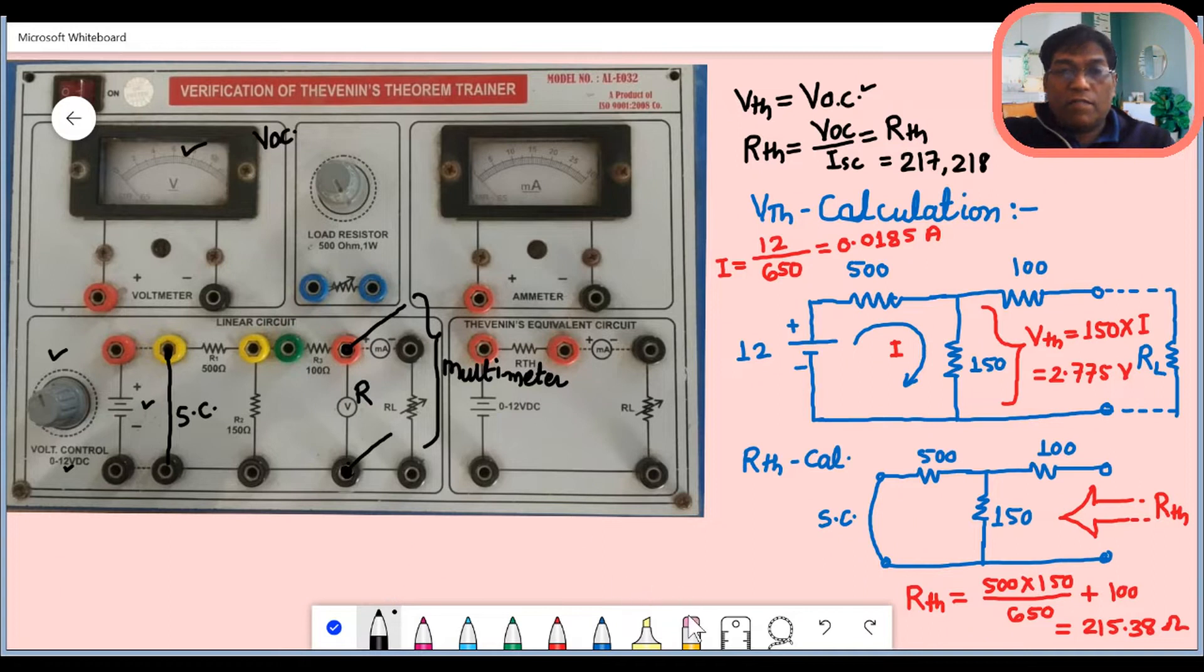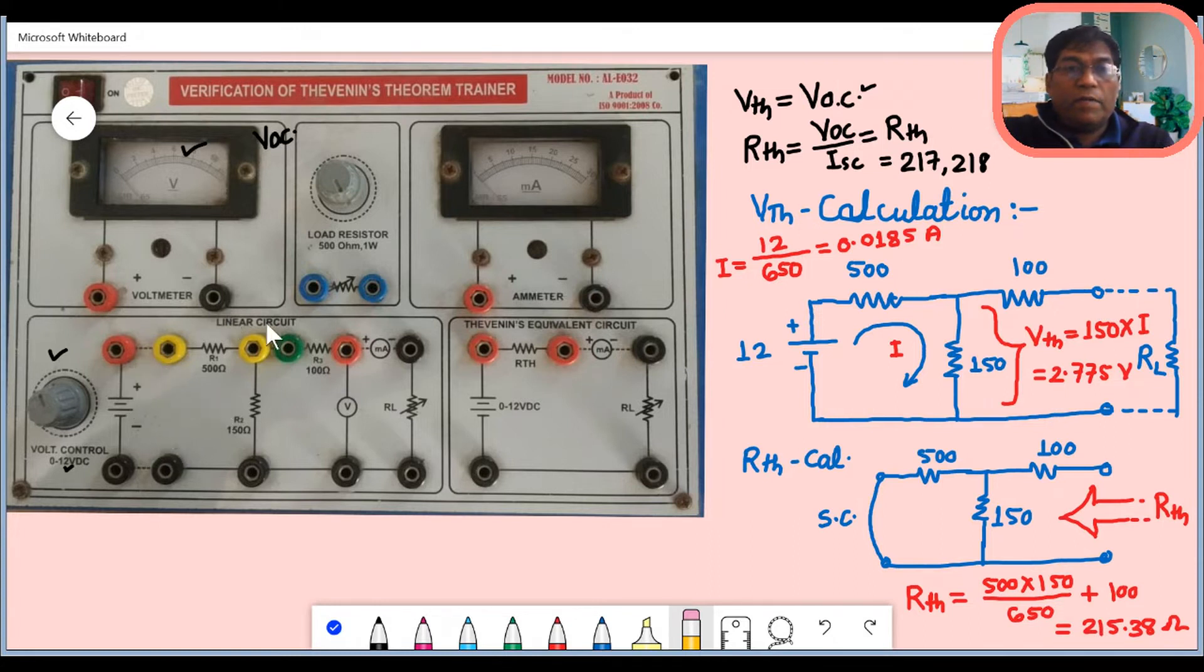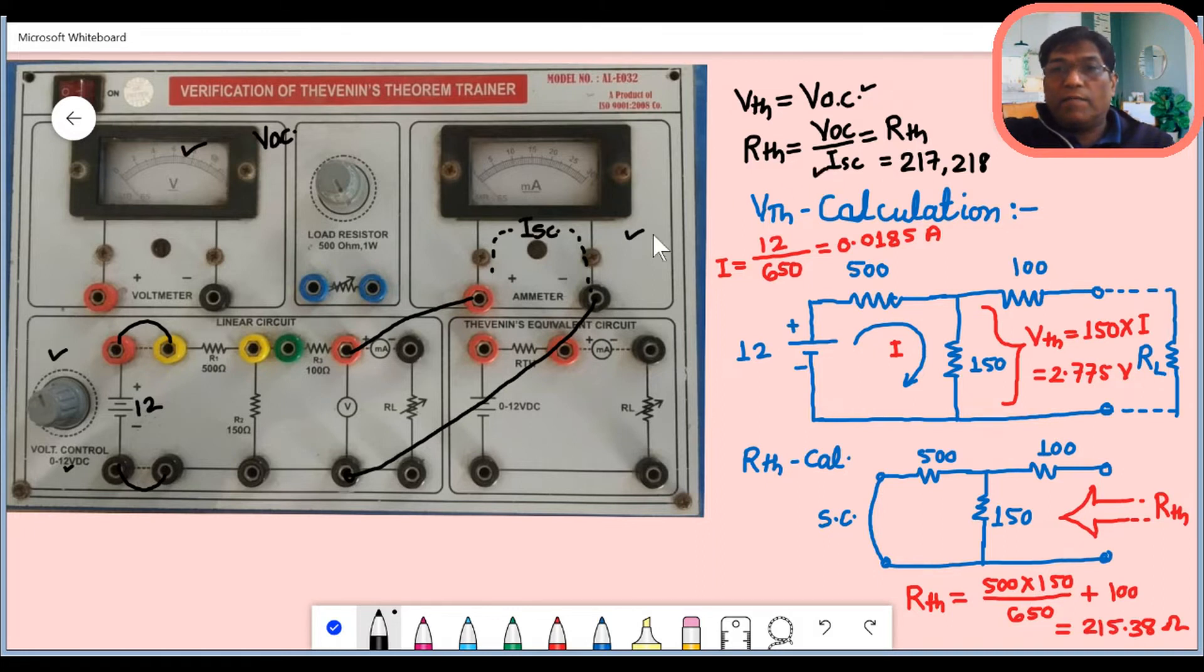The second method is without multimeter, we can use the ammeter. In that case, what needs to be done? ISC is to be measured. For measuring ISC, this connection will remain. This 12 volt source will be kept active. We will connect the ammeter between these terminals. The current measured by ammeter will be ISC, because we shorted this terminal by the ammeter. This reading can be recorded, and VOC by ISC will come out to be again approximately 200, which can be measured.